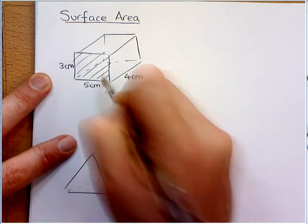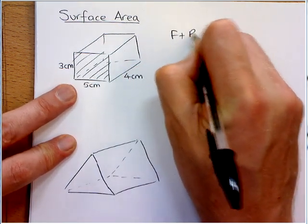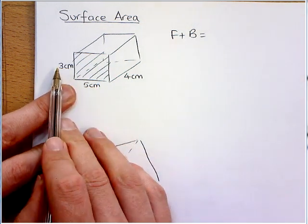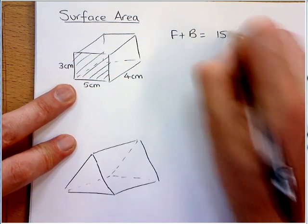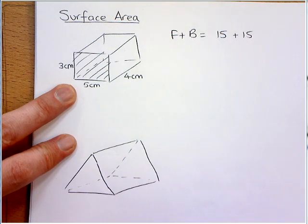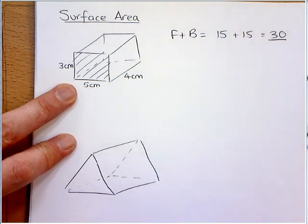So, you should be able to see here, this is the front and the back. So, 5 times 3 is 15. But there's another 15. So, that is a total of 30. I'm going to underline that one.